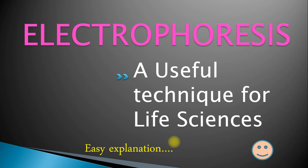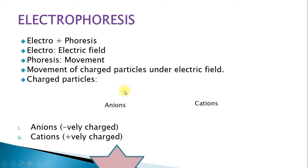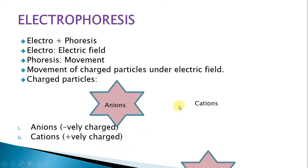Electrophoresis is a technique. The term has two parts: 'electro' and 'phoresis.' Electro means electric field, and phoresis means movement. So electrophoresis is the movement of charged particles under an electric field. The charged particles can be of two types: anions, which are negatively charged, and cations, which are positively charged.